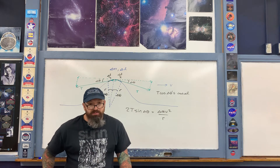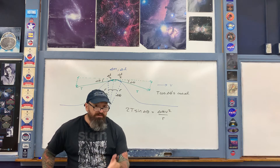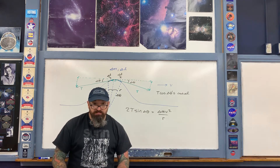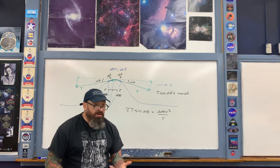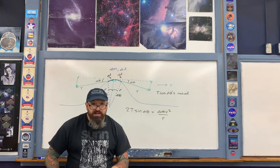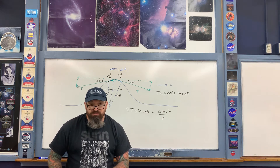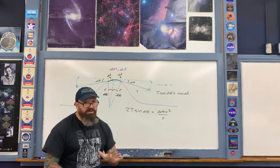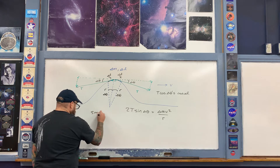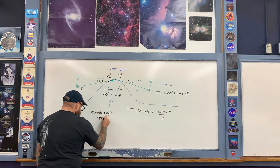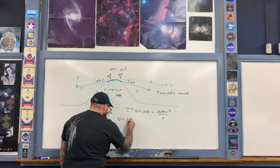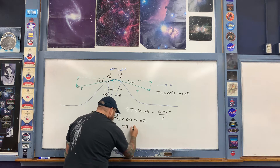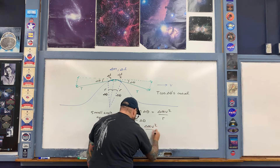When solving for the speed v, I need to write it in terms of quantities that are easy to measure. First, I'll get rid of the angle delta theta. Right away, let's make a small angle approximation: as the pulse propagates through the spring, the angle delta theta is extremely small. Specifically, sine of delta theta is approximately equal to delta theta, so the left-hand side of the expression becomes 2T delta theta.